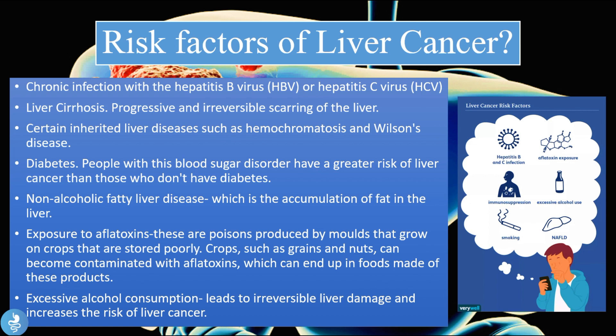Exposure to aflatoxins — poisons produced by molds that grow on crops that are stored poorly — is also a risk factor. Crops such as grains and nuts can become contaminated with aflatoxins, which can end up in foods made of these products and actually destroy the liver and lead to cancer. Additionally, excessive alcohol consumption leads to irreversible liver damage and increases the risk of liver cancer.